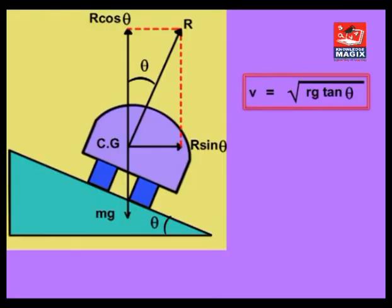This equation gives the maximum speed with which a vehicle can be safely driven along a curved road of radius r banked at an angle θ. The equation shows that the maximum speed for safety does not depend upon the mass of the vehicle and thus it is same for a vehicle of any mass.